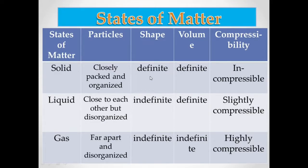Liquids have an indefinite shape because they follow the shape of their container — if you pour water into a square container it becomes square, if circular it becomes circular. However, liquids do have a definite volume, which is why we measure one liter, two liters, etc. Since the particles are disorganized, liquids are slightly compressible.